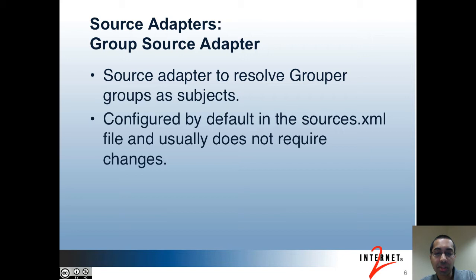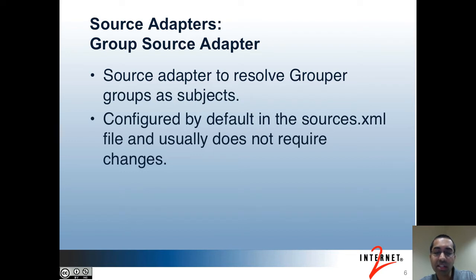Now I'll talk about the various source adapters available. The first one is the group source adapter. This is used to resolve Grouper groups and roles as subjects, allowing them to be added as members of other groups or assigned privileges or given permissions. The Subject API is largely configured in the sources.xml file, and each source has its own source element in the XML file. In the case of this source adapter, usually you can stick with the defaults. The subject type for this source adapter is group.